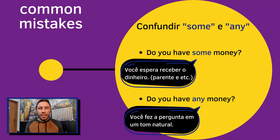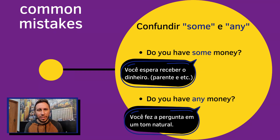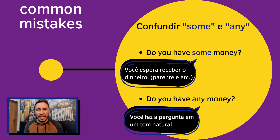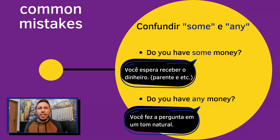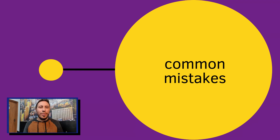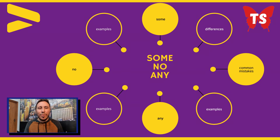Another common mistake is when people confuse some and any. If you ask: Do you have some money? — you expect to receive a positive answer, maybe asking a relative, a family member, a brother or sister. When you ask with some — do you have some money? — it's because you already expect to receive a yes. But when I ask: Do you have any money? — this is the natural tone to ask questions when you are not talking to a family member. You are just asking. This is the most common way to ask questions like this.